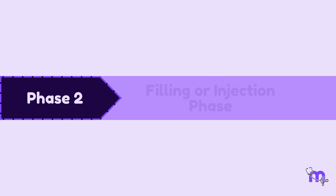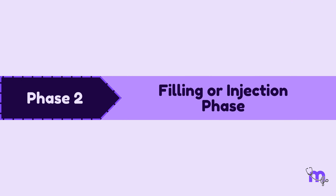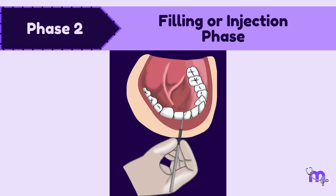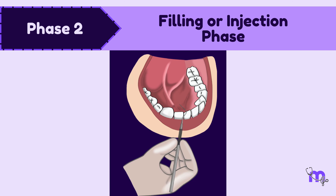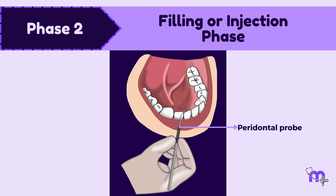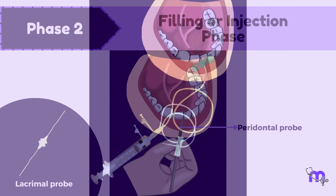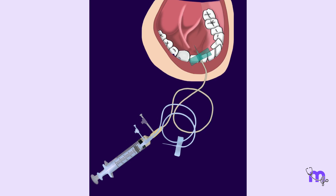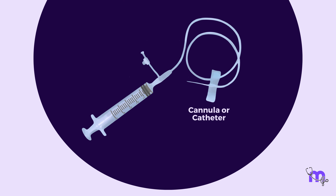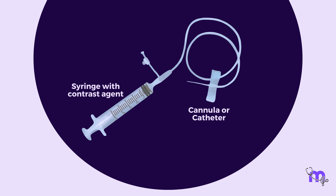In our case, following a thorough review of the patient's history, an initial panoramic radiograph was obtained. This imaging test ensured there were no contraindications before proceeding. Moving on to the filling or injection phase — the opening of the submandibular gland duct was located and dilated with a periodontal probe to widen it slightly.